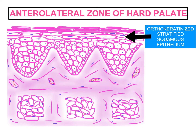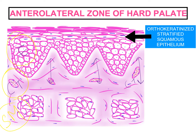Below the epithelium is the connective tissue. Again we have long papillae, like in the gingiva. So we have epithelium and connective tissue papillae. In addition to that, we have submucosa. Submucosa is absent in gingiva, but it is present in the hard palate.